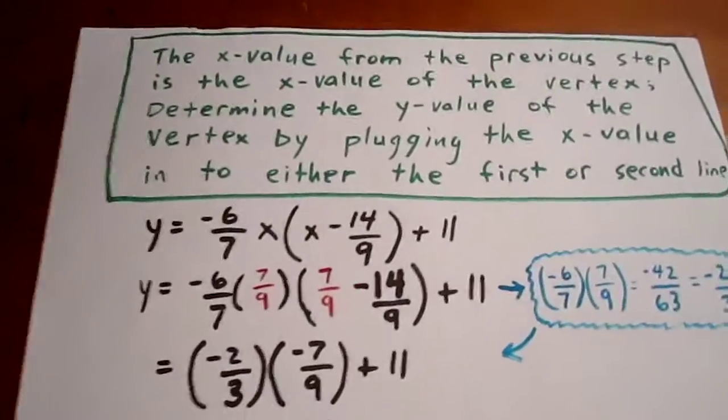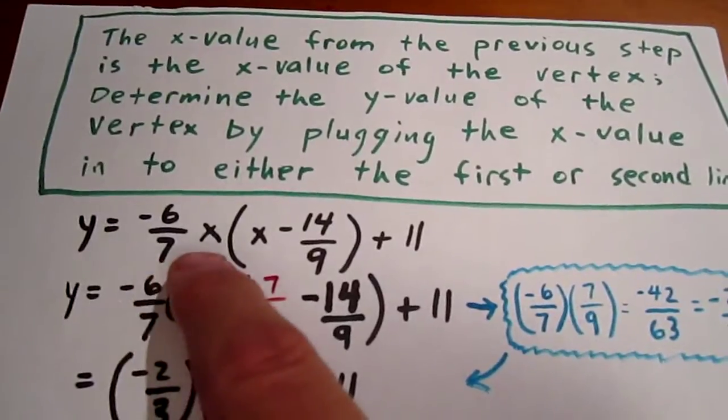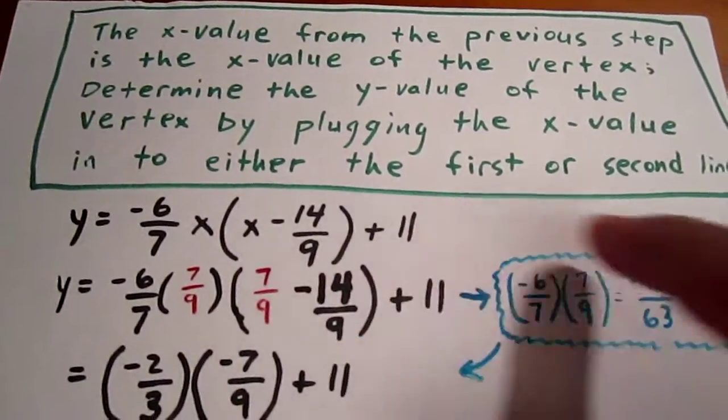What we now do is take that x value and plug it in to determine the y value. Negative 6 7ths x times x minus 14 over 9 plus 11.